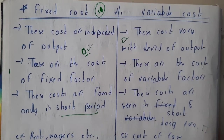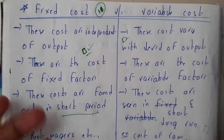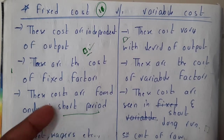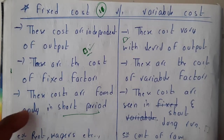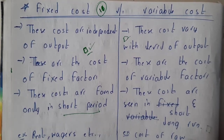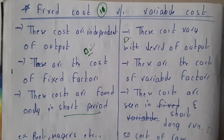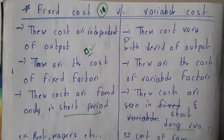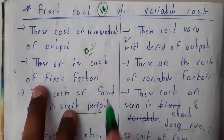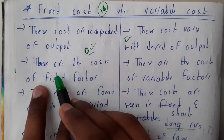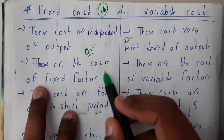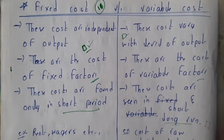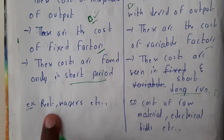Fixed cost we will be observing in the short period, because basically any kind of commodity will change its price over time. That is the reason why fixed cost is really rare and seen only in short periods, whereas variable cost we will be seeing in the long run because they vary according to circumstances. These are the cost of fixed factors versus the cost of variable factors.